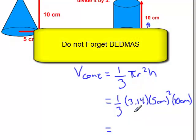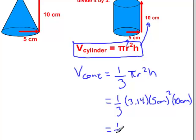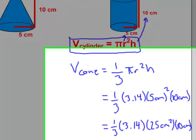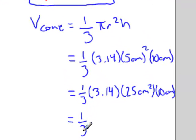When we multiply this out, I'm going to use the rules of BEDMAS. So I'll bring that exponent of 2 into the 5 first. So I'll have one-third times 3.14 for π. 5 centimeters squared becomes 25 centimeters squared times 10 centimeters. Now I'm going to multiply these three numbers together on my calculator.